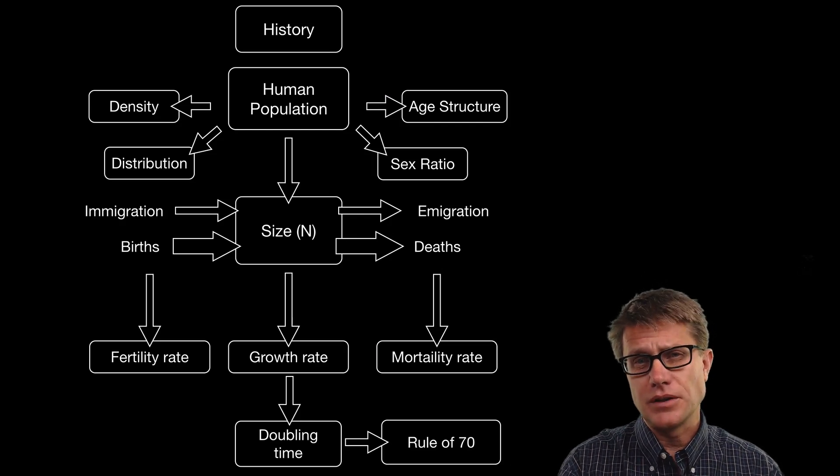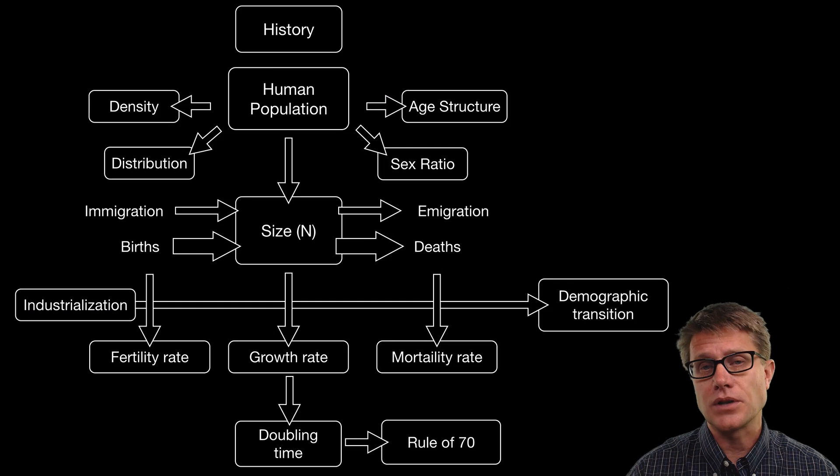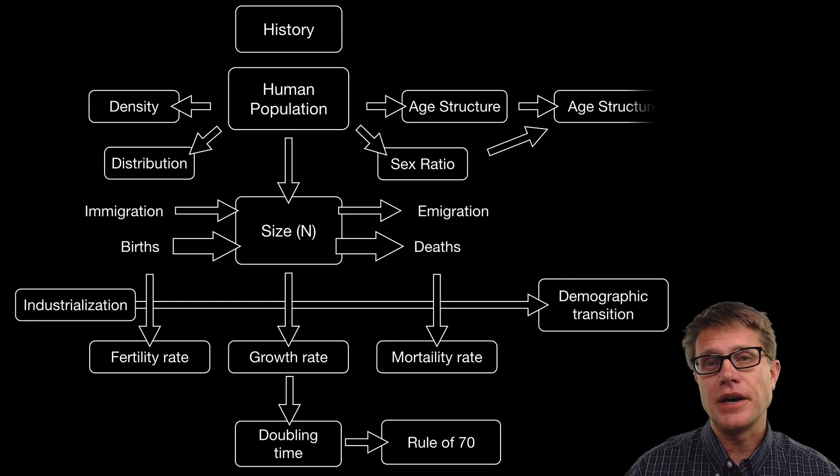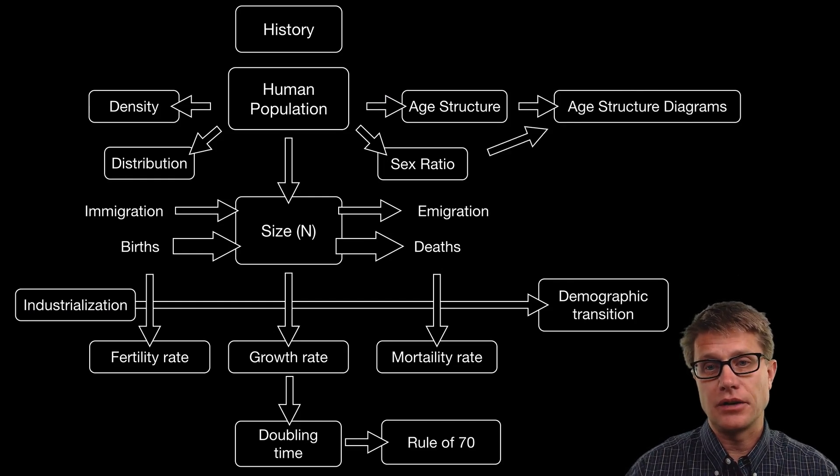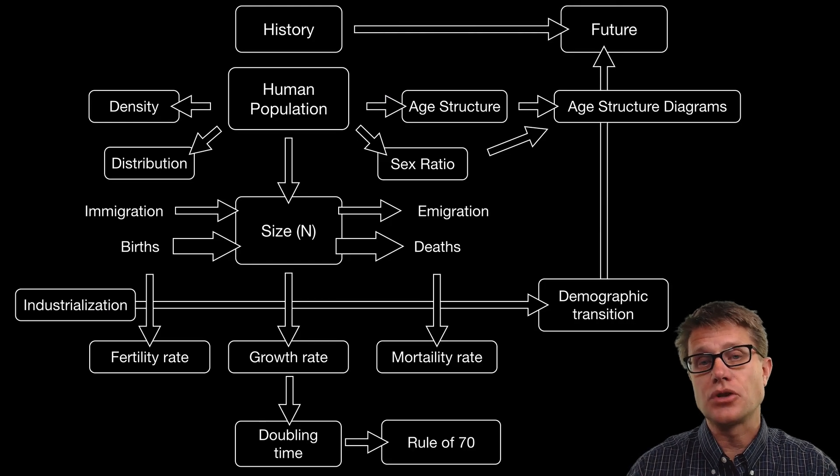We will talk specifically about birth rates using the fertility rate and death rates using the mortality rate. And then how industrialization, so the development of a country, can lead to what is called the demographic transition. And then finally we will finish up with the age structure diagrams. And these two things can be used as tools to predict the future population.